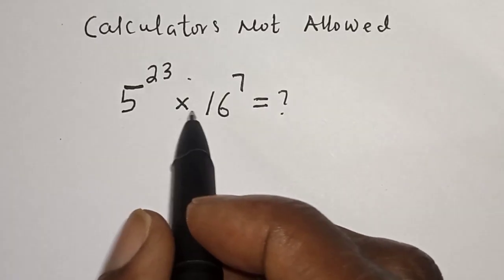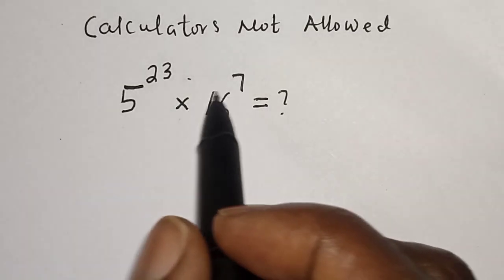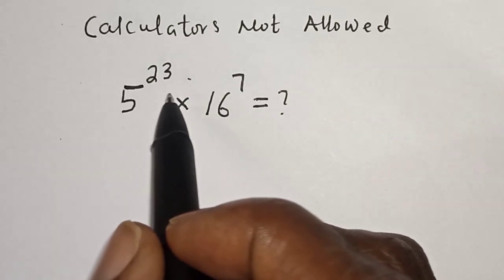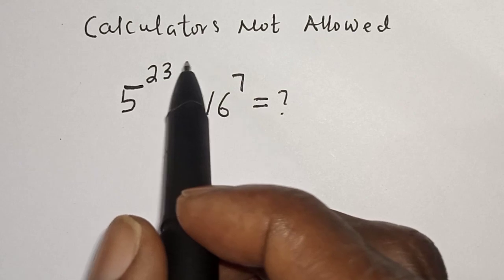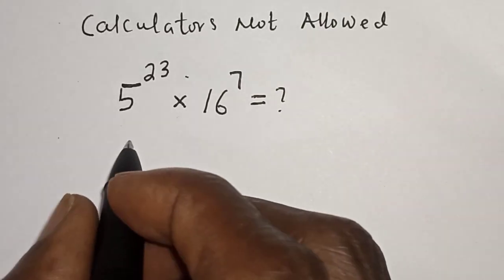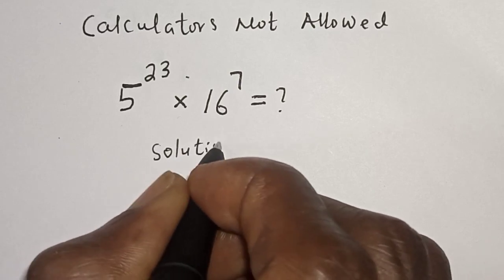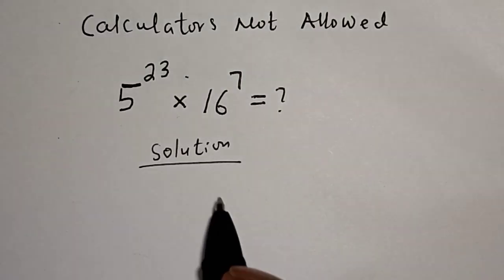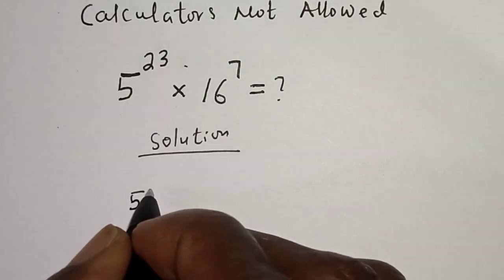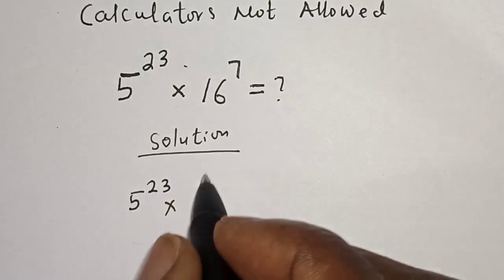5 raised to power 23 multiplied by 16 raised to power 7 is equal to what? Hi everyone, welcome to my class. In this class we want to evaluate this nice math problem. But before we proceed, please don't forget to like, share, comment and subscribe. Thank you. Solution: we have 5 raised to power 23 multiplied by 16.